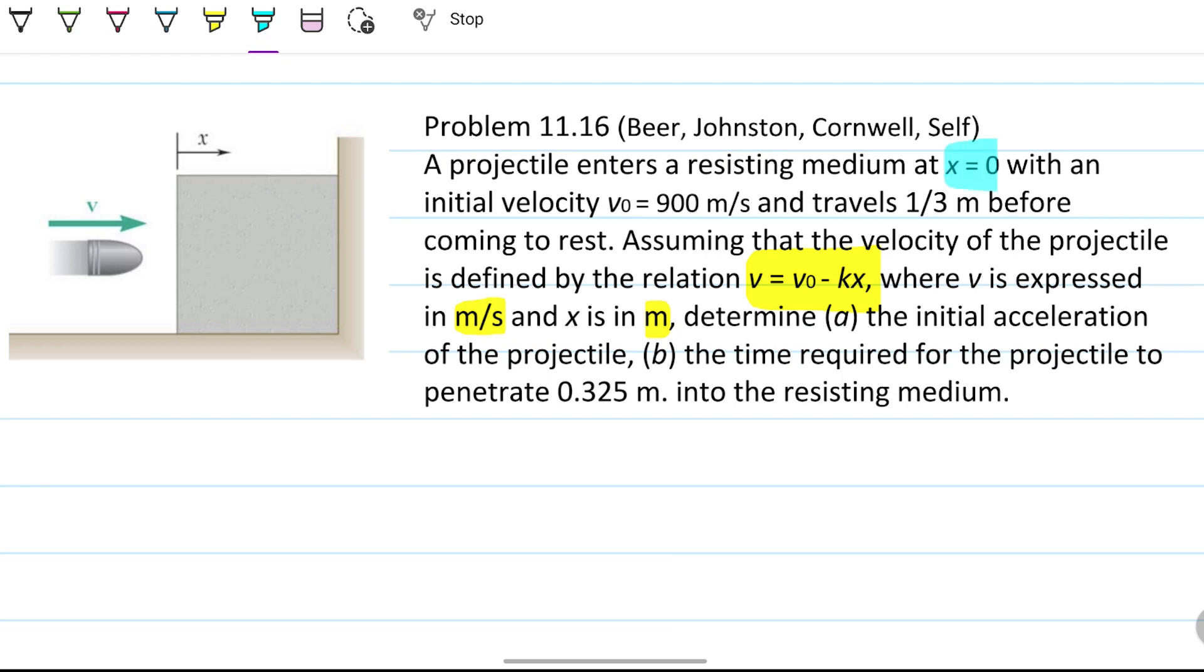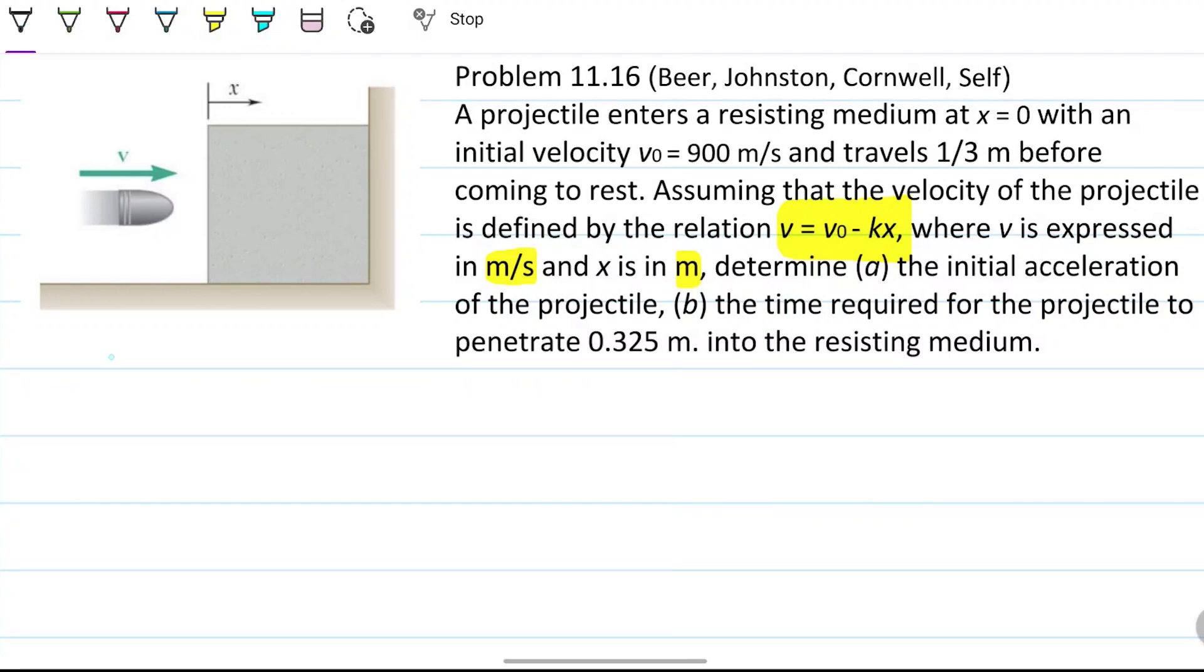We know a couple of important information. We have two boundary conditions, one for x and position. So we know that at t equals zero, the velocity equals v₀ which is 900 meters per second. So that's an important piece of information.